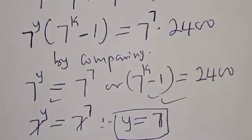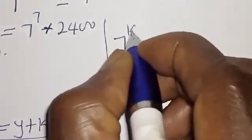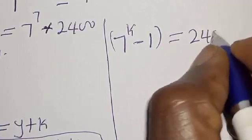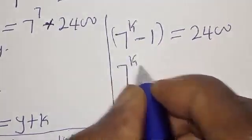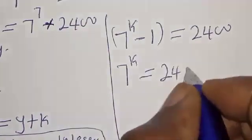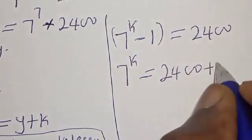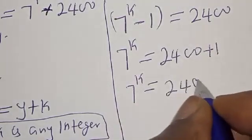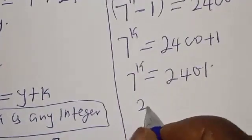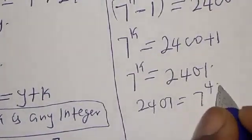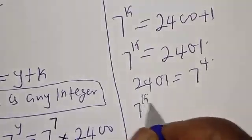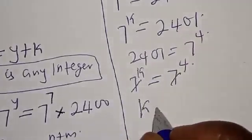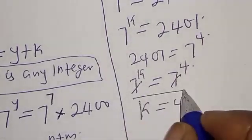For Case 2, we have 7 raised to power k minus 1 equal to 2400. Adding 1 to both sides, 7 raised to power k equals 2401. Now 2401 is the same as 7 raised to power 4. Then we have 7 raised to power k equal to 7 raised to power 4. Since they have the same base, k is equal to 4.